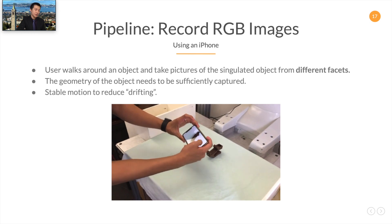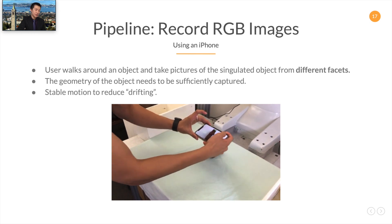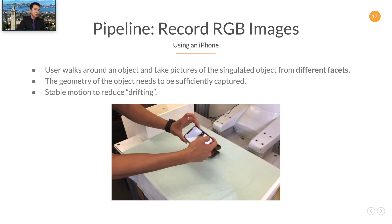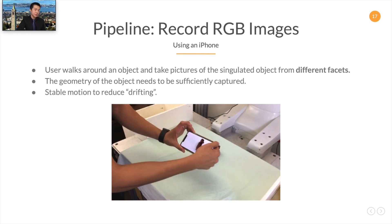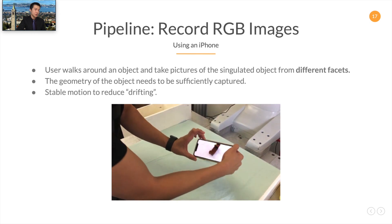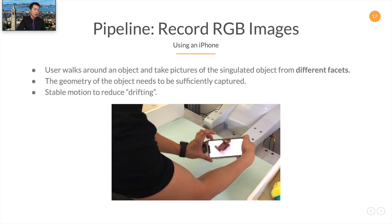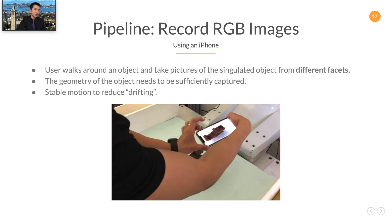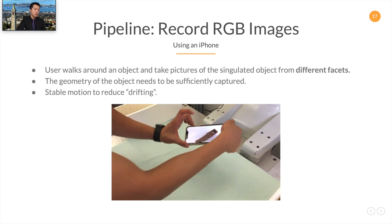Let us elaborate on each step in the pipeline. First, when recording RGB images, we walk around an object while taking a sequence of images of the object from different views. We need to sufficiently capture the object's geometry, and we should also make the motion stable in order to reduce drifting.